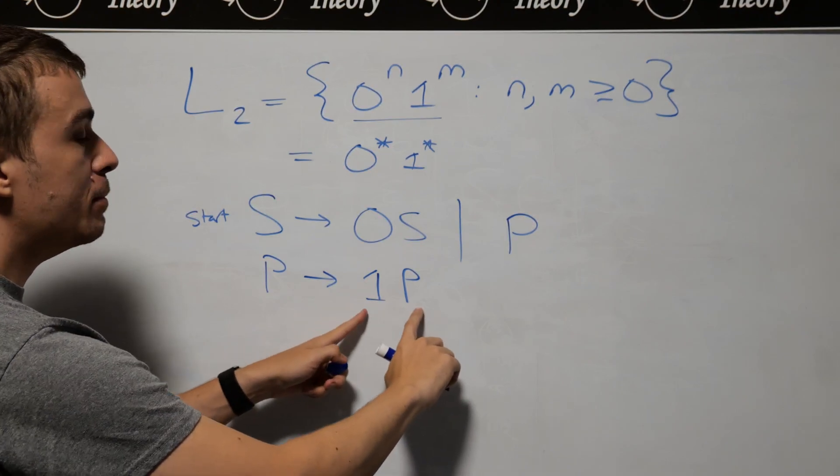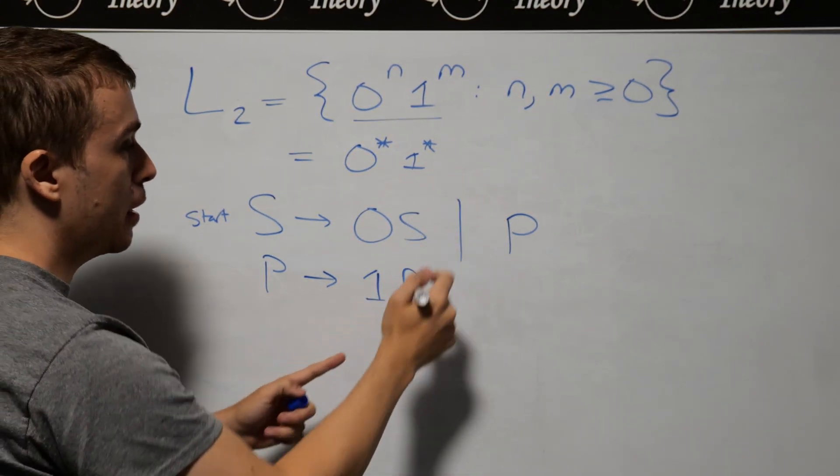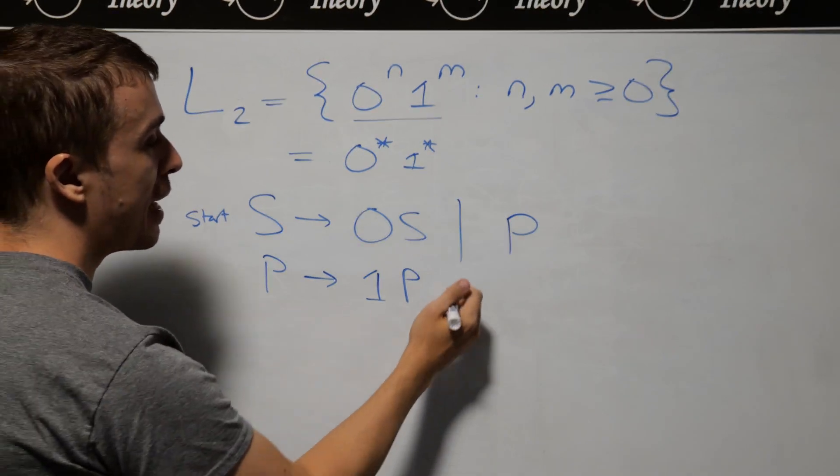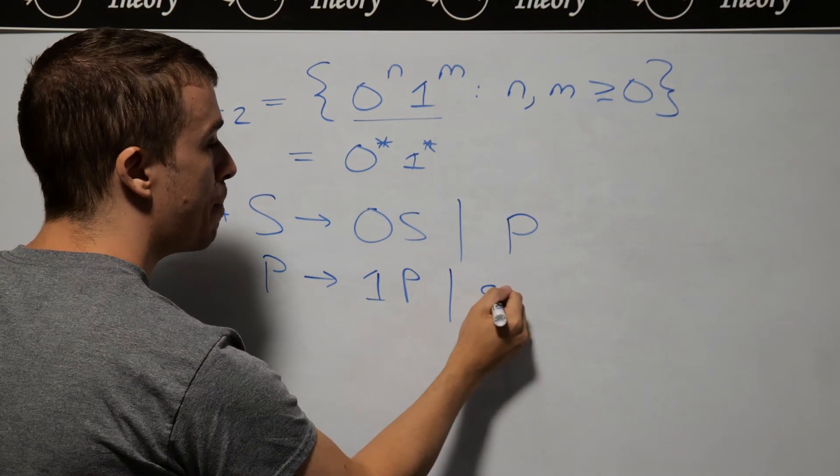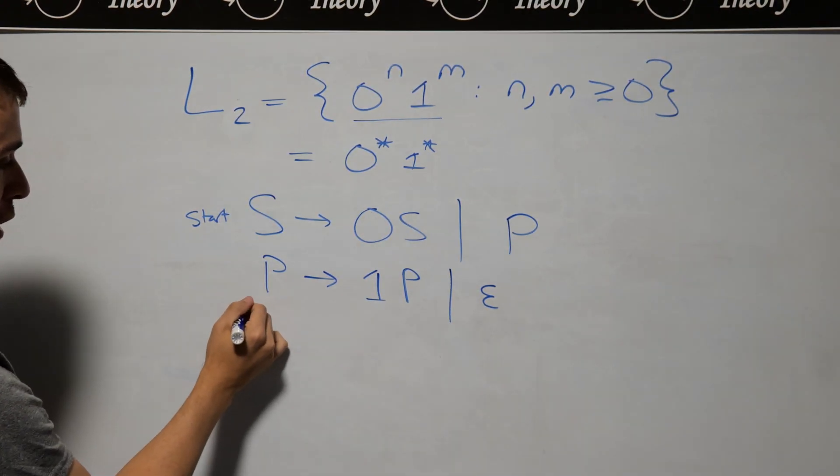And now, once I'm done generating the ones, well, there's nothing after the set of ones here. And I can do this as many times as I like. So I need to be able to stop by making the variable go away.